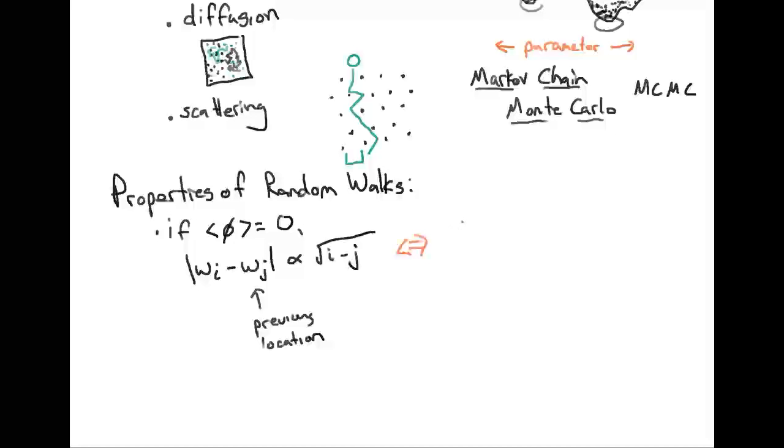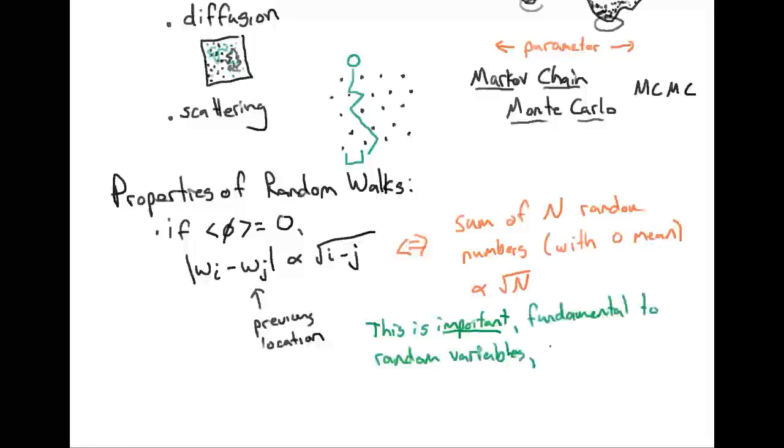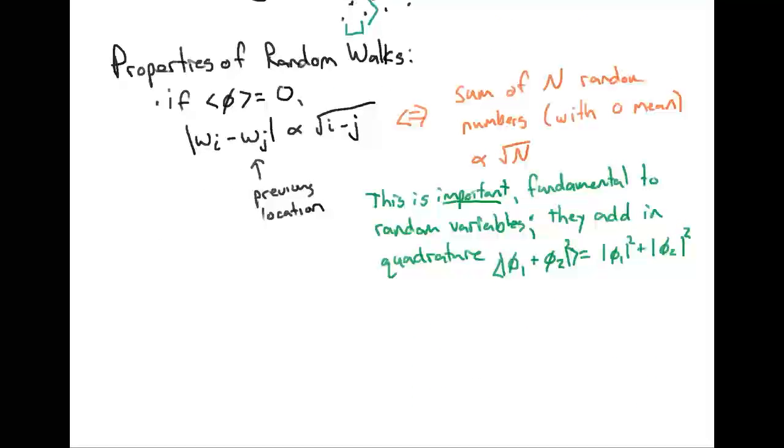Another way of saying this is that the sum of n random numbers with zero mean is proportional to the square root of n. This is a very important property. It's something fundamental about random variables, which is that they add in quadrature. Quadrature means that if I have variable one and I'm adding another random variable two, the square of that amplitude will tend to equal the amplitude of the first number squared plus the amplitude of the second number squared.